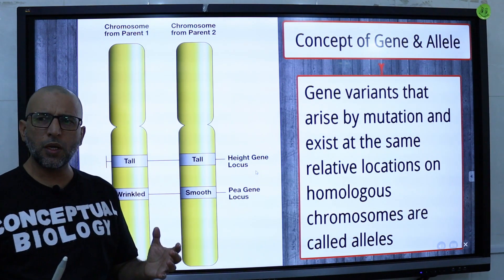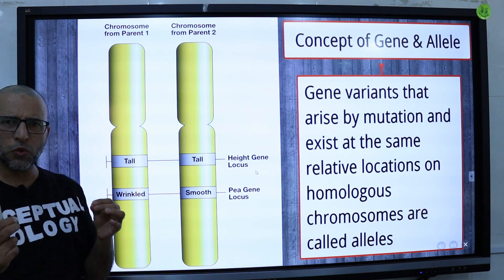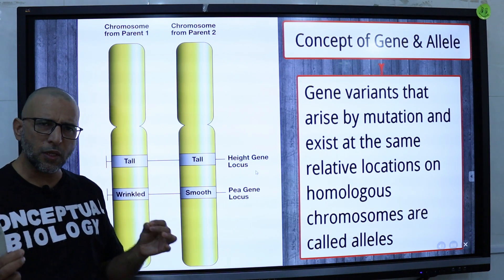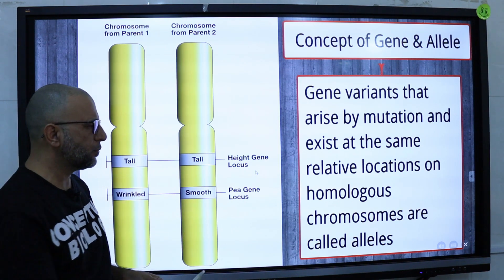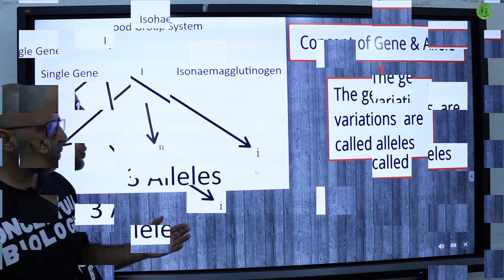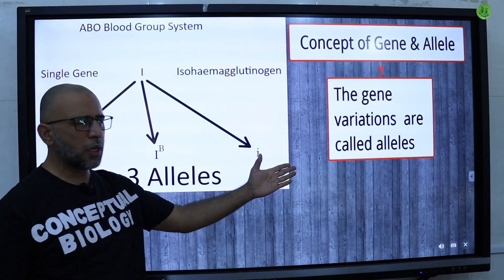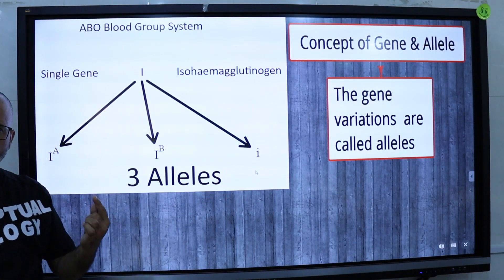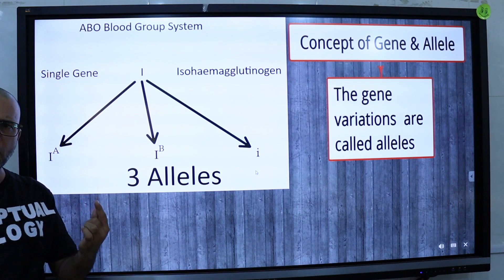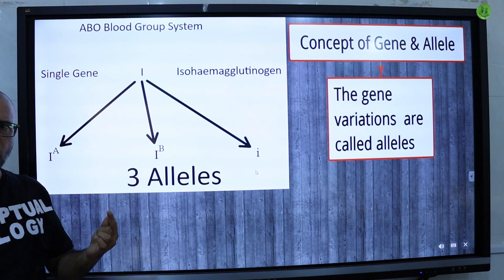Once a new allele exists, it is forced to compete with other alleles in the population. Gene variations are called alleles, and one chromosome contains hundreds to thousands of genes.